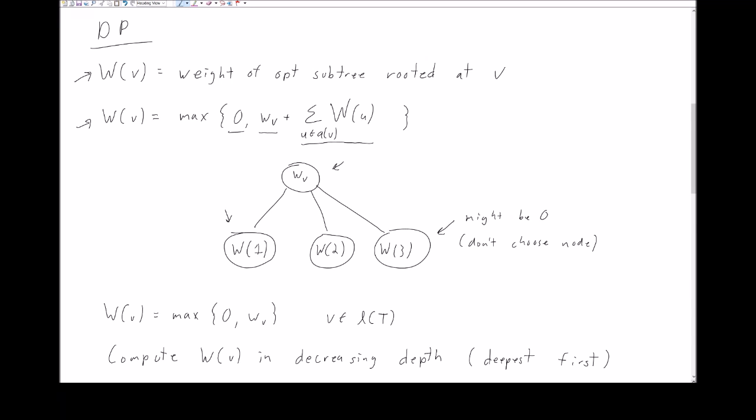Our final ingredient is to identify constant values for the smallest subproblems. In this case, our smallest subproblems are the weights of the optimal subtrees at the leaves. The choice is simple: we either include the leaf in the tree or we don't. If we don't include it, the value is zero. If we do include it, the tree has a single node and we get W(V) as its value. We do this for every leaf of the tree.